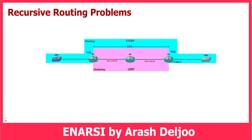This problem can happen when we have a GRE tunnel — a point-to-point GRE tunnel — or MGRE, which means multi-point GRE. This is possible in a DMVPN network, but here we are learning about this problem with a simple scenario using a point-to-point GRE tunnel. This problem also occurs in MGRE within DMVPN.